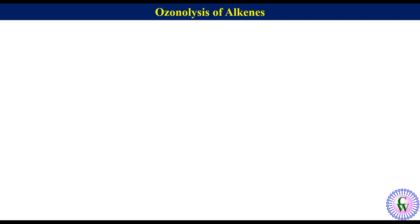Let's go through examples. Ozonolysis of 3-methylpent-2-ene: to find the products, cut the molecule from the middle of the double bond to get two fragments, and then put the oxygen at the terminus of each double bond. Thus the two products will be 2-butanone and acetaldehyde.